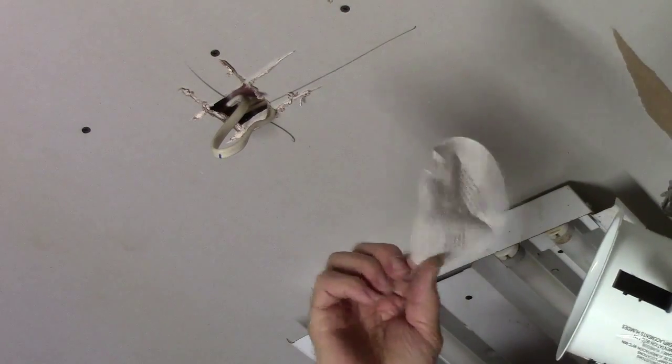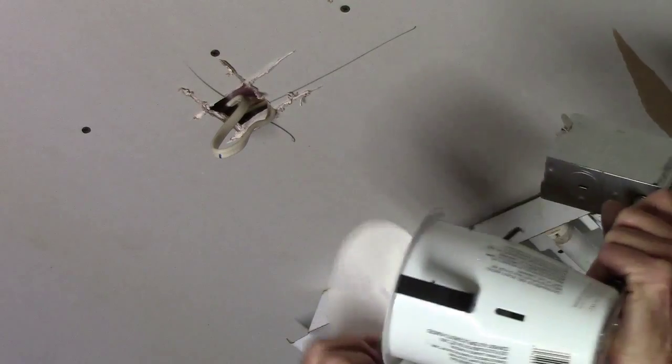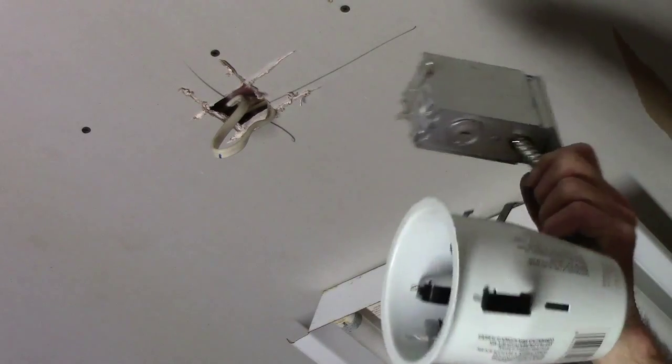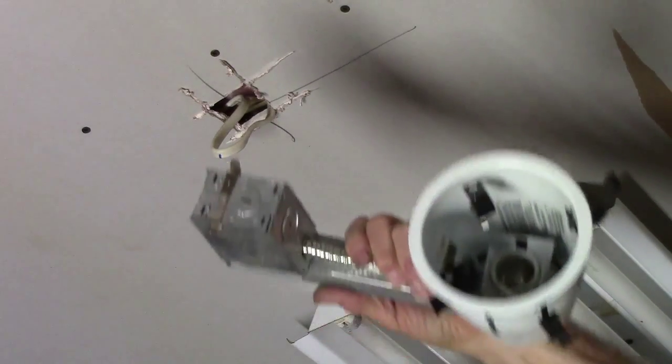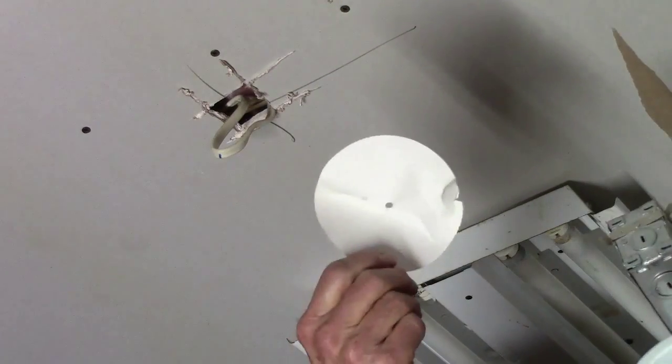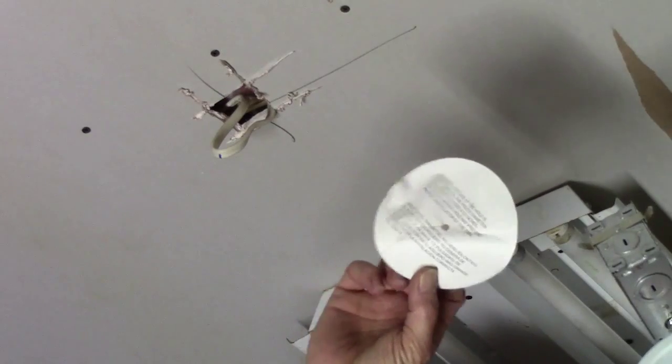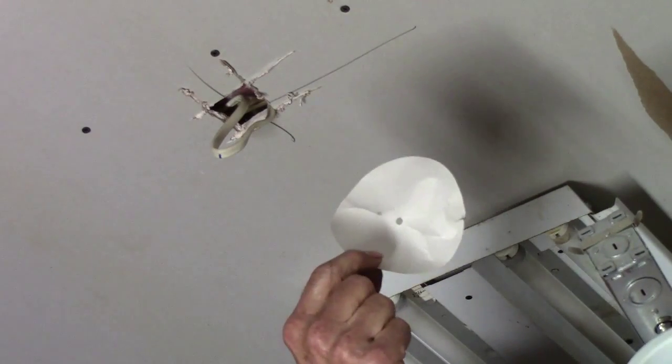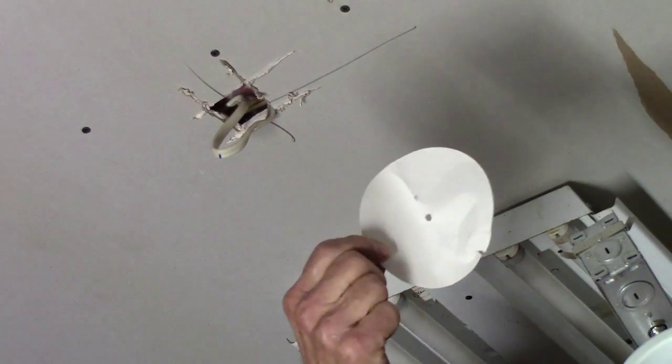You've got this template that comes with this, and this template is for this light. Now, some of them are four inches like this one, and some of them are six inches. Well, don't just assume the hole is six inches and get you a six-inch hole saw and cut it. It's just a hair under six inches.